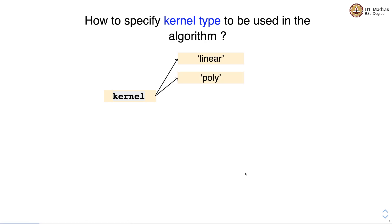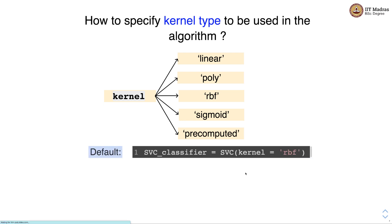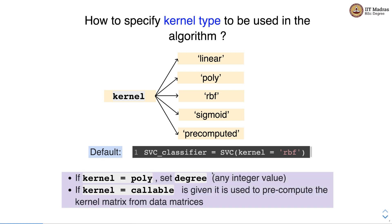To specify the kernel type, we can set the kernel to linear, polynomial, RBF (radial basis function), sigmoid, or use pre-computed kernels. We set the kernel using the kernel argument of the SVC object. Here, the kernel is set to RBF, which is the default choice.